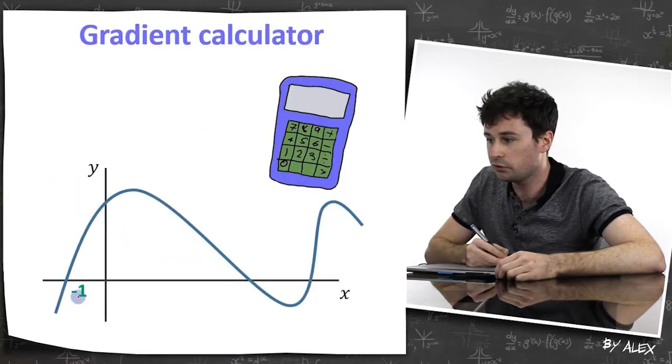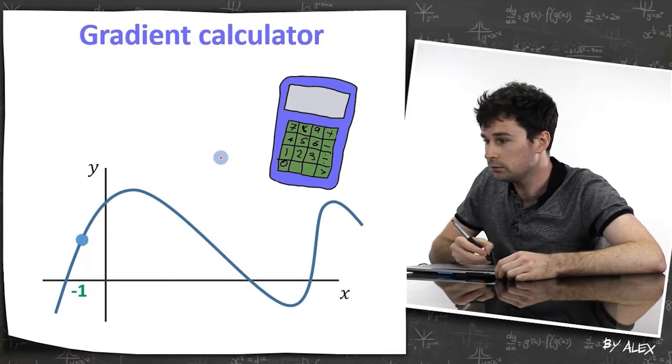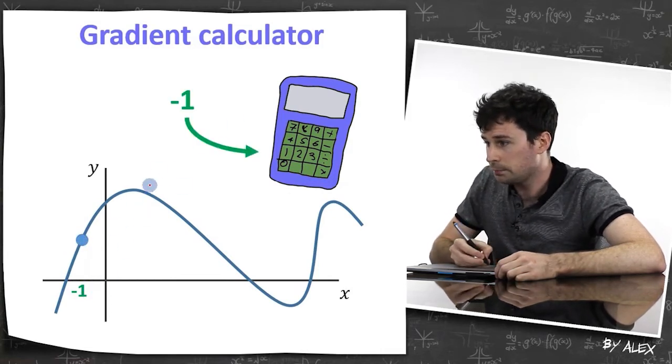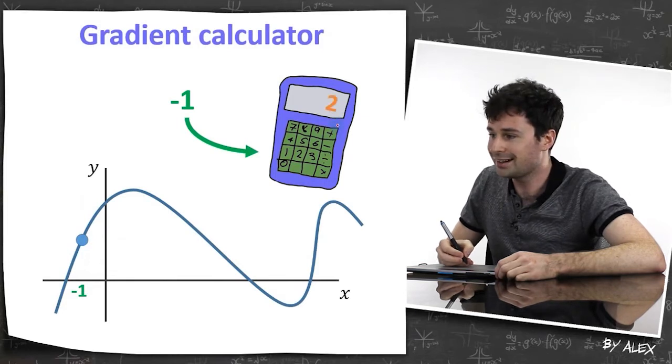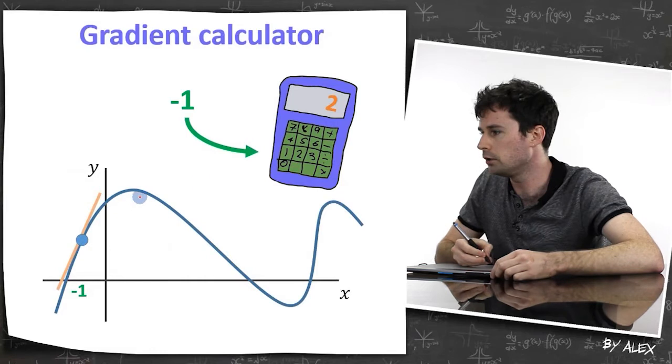Here we've got some random curve. Say we want to find out the gradient at x equals negative one. Well, here's the point, and we put in negative one into our gradient calculator, and it gives us two. And we look at that, yep, that's about a gradient of two. Perfect.